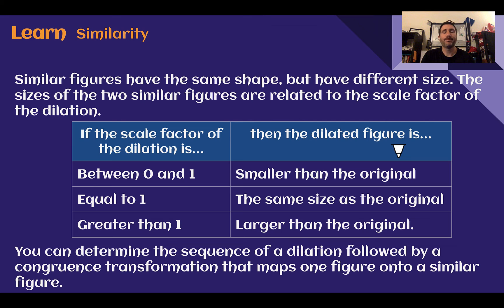Let's learn similarity. Similar figures have the same shape but have a different size. The sizes of the two similar figures are related to that scale factor of our dilation. If our scale factor is between 0 and 1, it's going to be smaller, a reduction. If the scale factor is exactly equal to 1, it's the same size. There's no change. And if it's greater than 1, it is larger than the original, an enlargement. We can use what we see as happening, did it get larger or smaller, to help us determine what sequence of transformations we could use to map one figure onto the other.